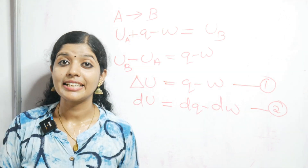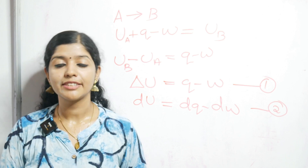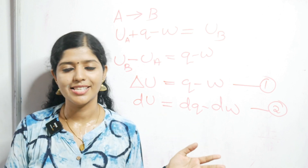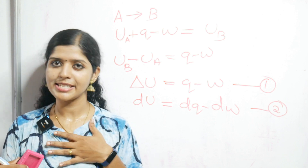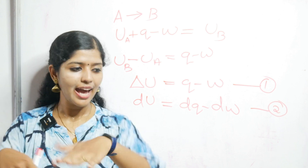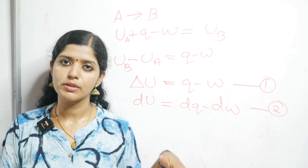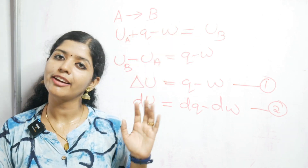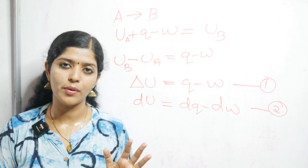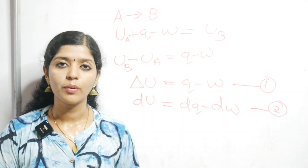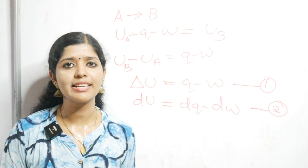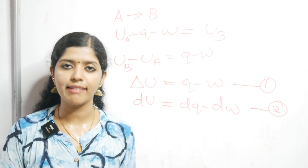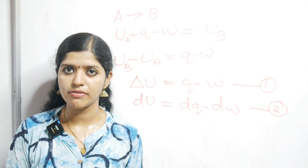Whenever we are learning something in thermodynamics, we always have to learn about the system as well as the surroundings. If you consider me, I am the system here and my class is the surroundings. Similarly, whenever A is converted into B, there will be a system and there will be some surroundings also. Now in the case of an isolated system — isolated system means there is no heat transfer or no energy transfer.